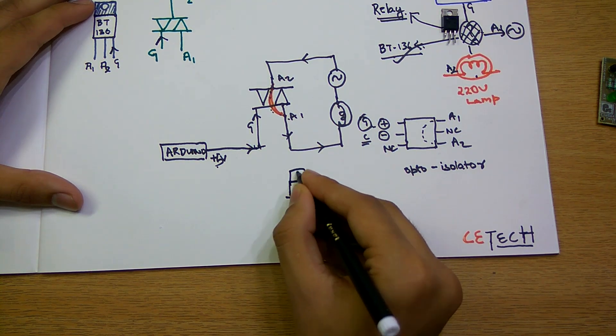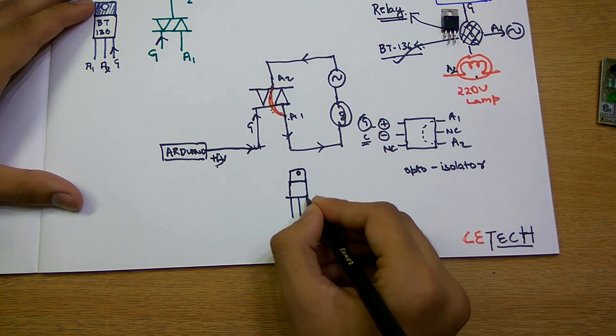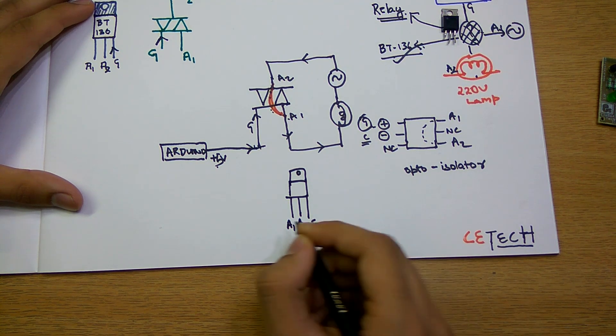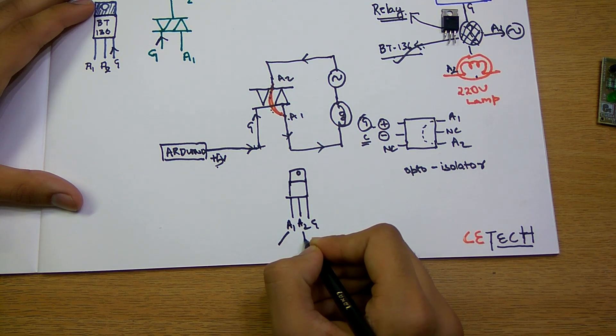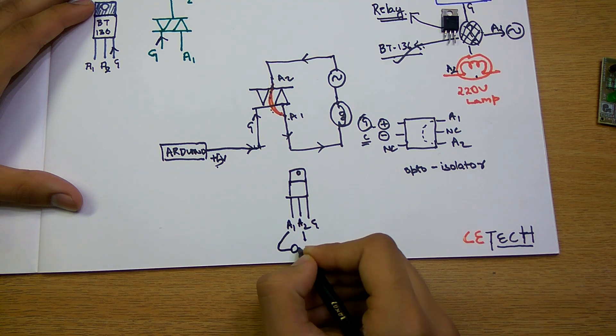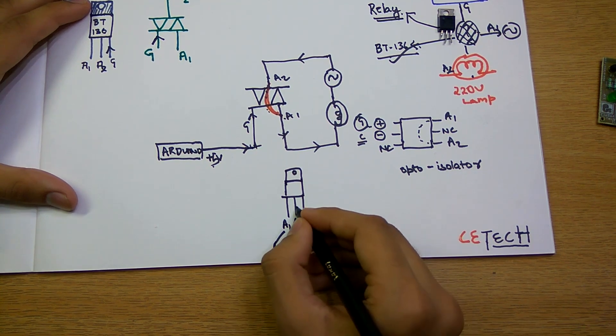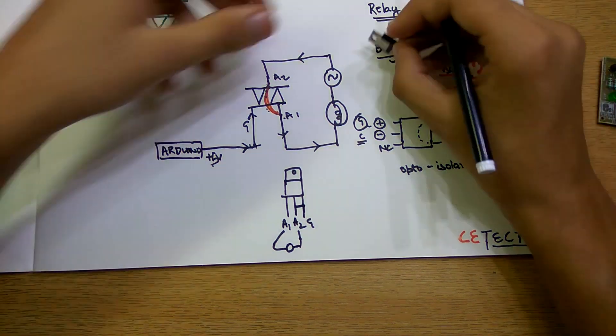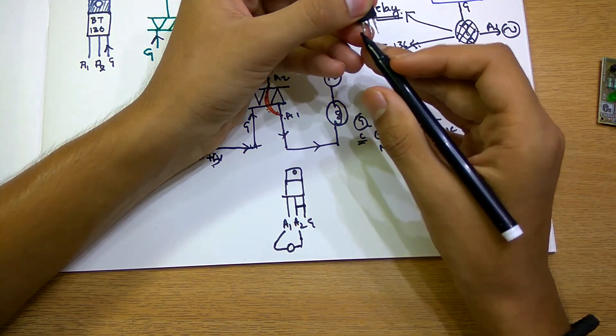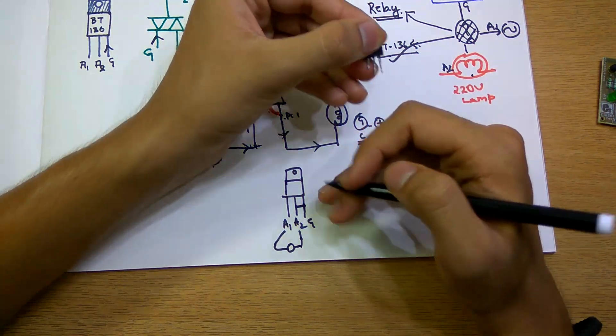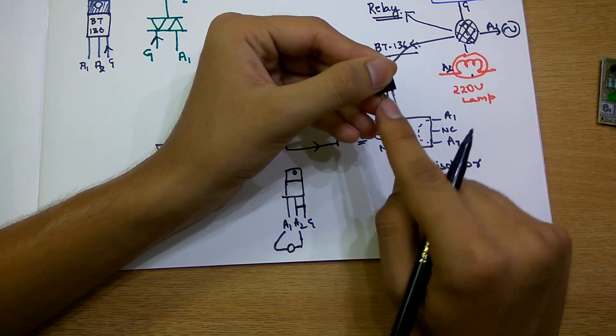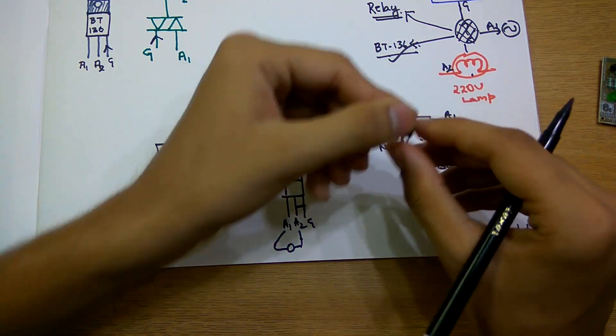So here we have the TRIAC. This is the A1, this is the A2, and this is the gate. A1 and A2 are also connected when A2 and G, that is the gate, is connected. So if we have a switching circuit wherein these two are connected to the further circuit, then these two when connected will connect these two, which is basically an application of this.